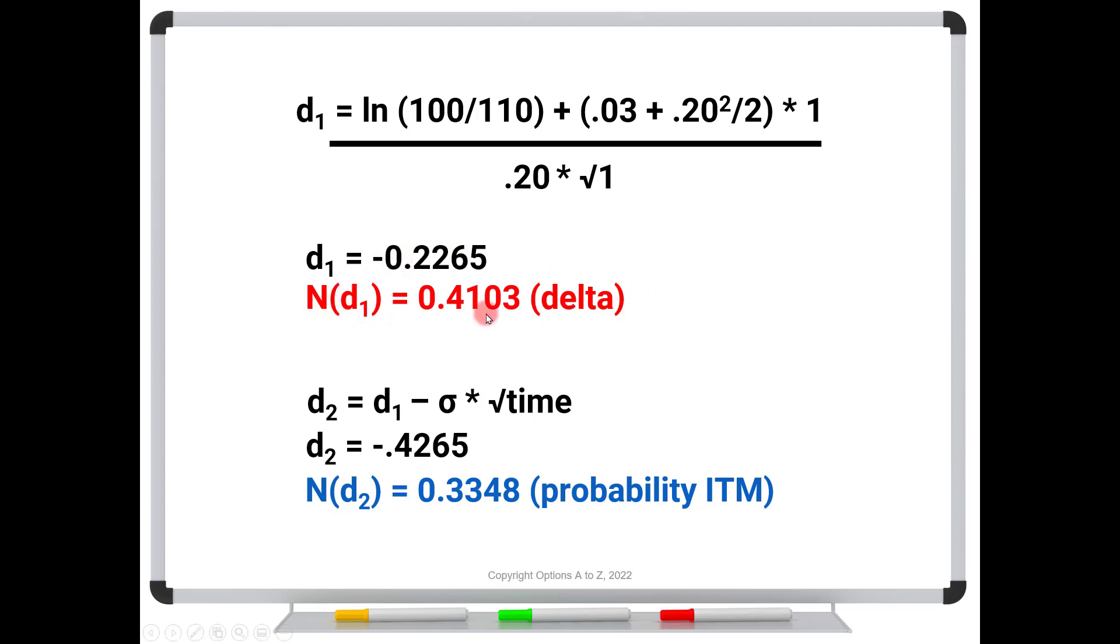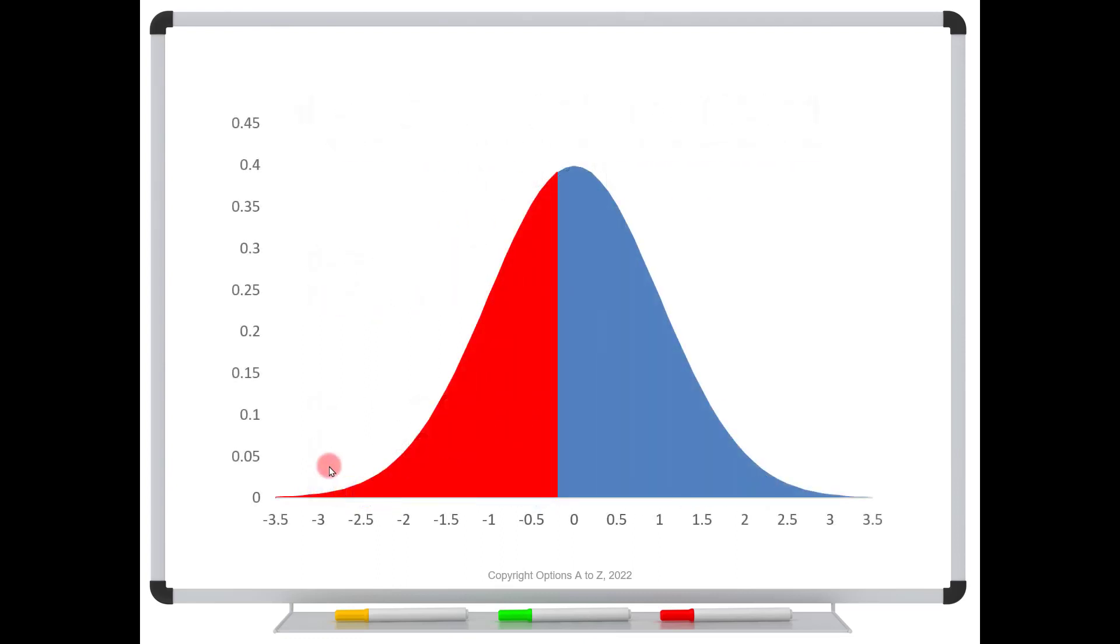So this number right here in red, this 0.4103, again, if we fed that into an Excel spreadsheet, what you're finding is this red area. That's 41% of the area under the curve. But once we find ND2, it actually subtracts some of this. And so this green area is the discrepancy. And you can see that's not zero. There's definitely some discrepancy between the delta versus the true probability of being in the money.